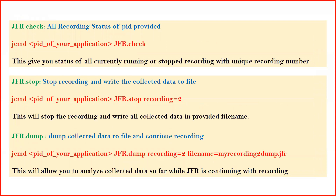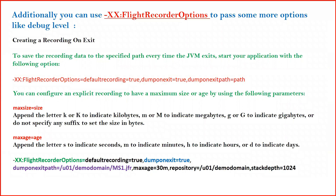If you have initiated a JFR recording and want to check whether it is running, you can run jcmd <PID> JFR.check. To stop the recording at any time — for example if the file size is getting too large — you run jcmd <PID> JFR.stop. If you want to dump the collected data to a file and then continue recording, you use jcmd <PID> JFR.dump.